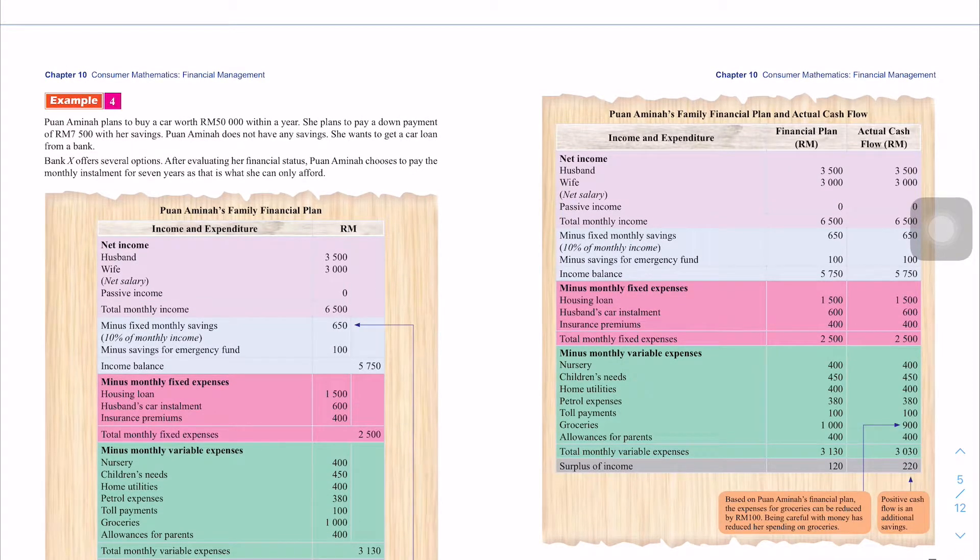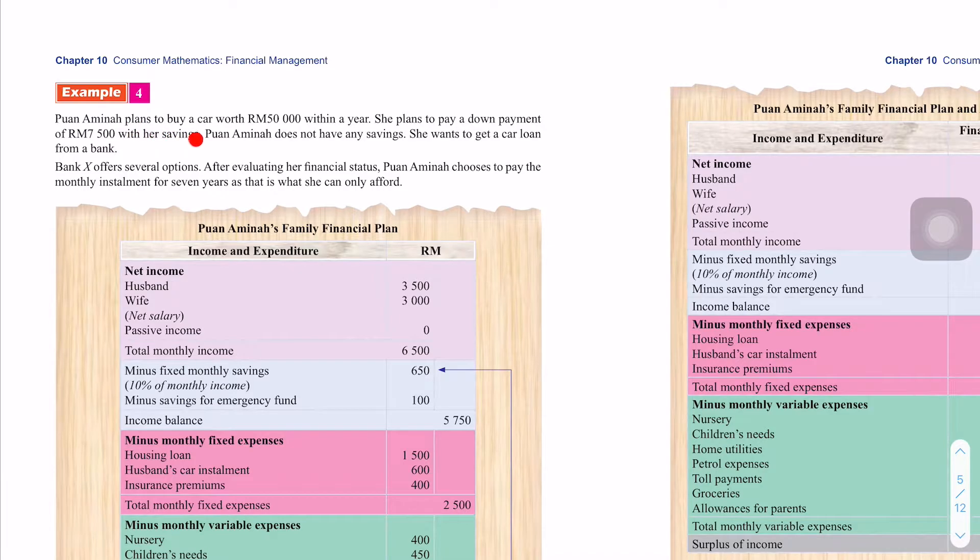Cuba tengok example 4. Puan Aminah does not have any savings. She wants to get a car loan from a bank. Bank X offers several options. After evaluating her financial status, Puan Aminah chooses to pay the monthly installment for 7 years as that is what she can only afford.